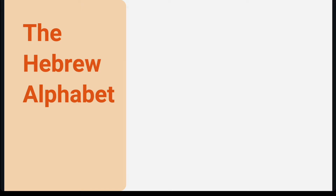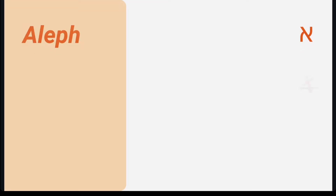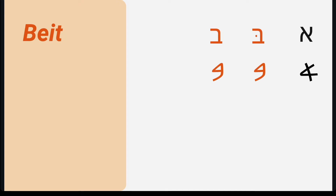The first letter of the Hebrew alphabet is Aleph, and Aleph is a silent consonant. Originally it functioned as a glottal stop, but with the modern Israeli pronunciation that we use, it is essentially silent. The next letter is Beit — when it has a Dagesh, that dot, it makes the B sound like in 'boy.' But when it lacks the Dagesh, it makes a V sound like in 'victory.' The third letter is Gimel, which produces the G sound like in the name 'Gary.'